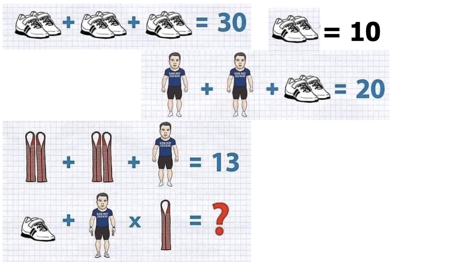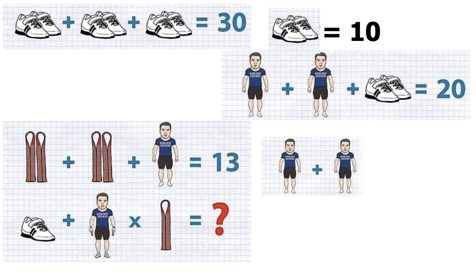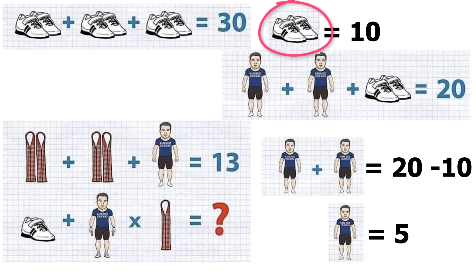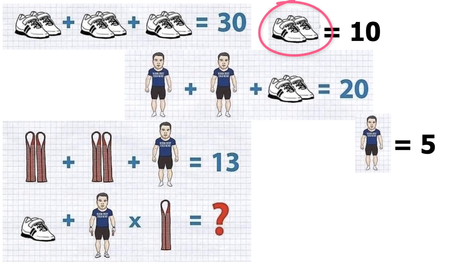From the second line, we can solve that each man is equal to 5. This is because we already know that the value of one pair of shoes is 10 and hence value of man must be 5.